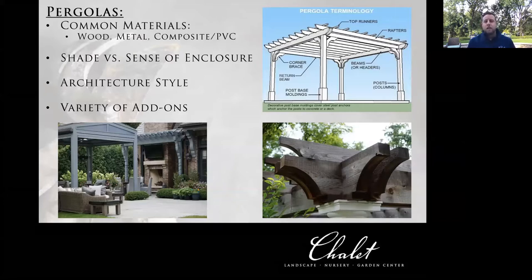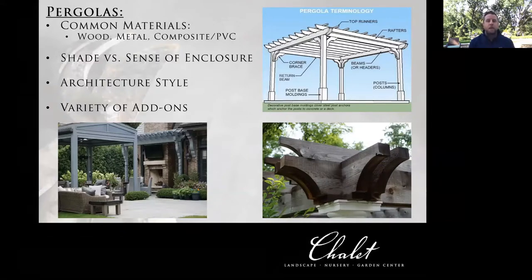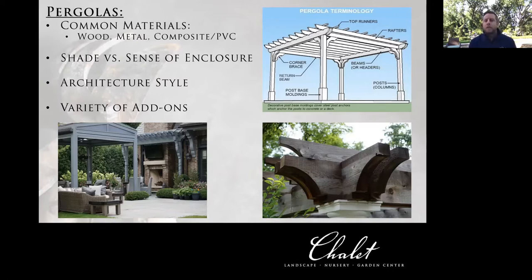Common materials are wood — the most common is cedar for pergolas, as you can see in the bottom right with those decorative end posts. Nowadays you'll also see a lot of metal ones for a more modern contemporary look; the bottom left is a Karate pergola, a metal fabrication. Then composite or PVC — this is one of the things where technology has come a long way and expanded the potential materials for these types of structures.